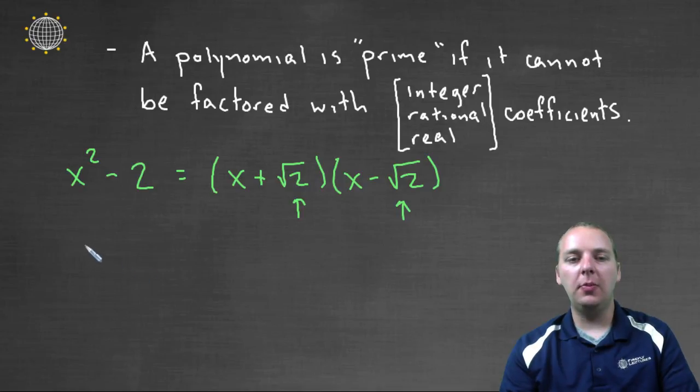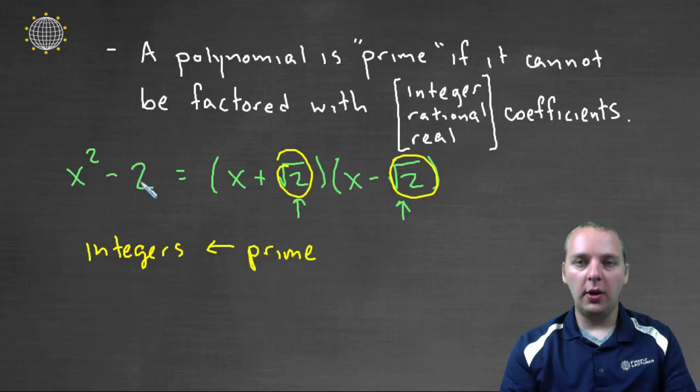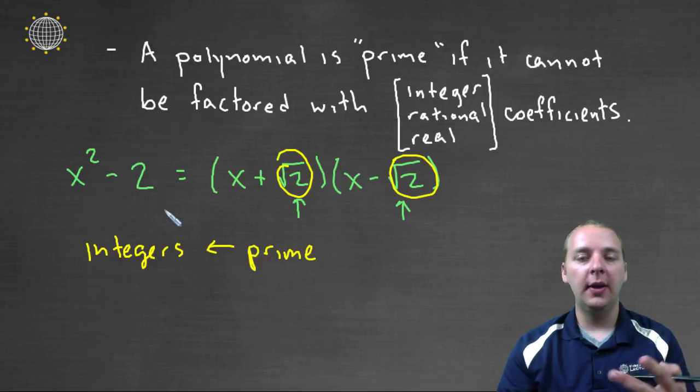So if you're talking about being able to be factored over the integers, then this would be considered as prime, because it's not able to be factored with an integer here or here. Think about it, you would want two numbers that multiply to two but that add up to zero, because there's no x term, the x coefficient is zero. Well the only integers that multiply to two are one times two, and that doesn't add to zero.